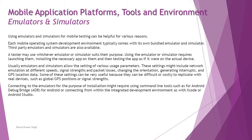Using an emulator or simulator requires launching it, installing the necessary app, and then testing the app as if it were on an actual device. Emulators and simulators typically allow setting various usage parameters, including network emulations at different speeds, signal strength and packet losses, changing orientation, generating interrupts, and GPS location data. These settings can be very useful because they can be difficult or costly to replicate with real devices — for example, simulating varying GPS positions or signal strength without physically traveling.